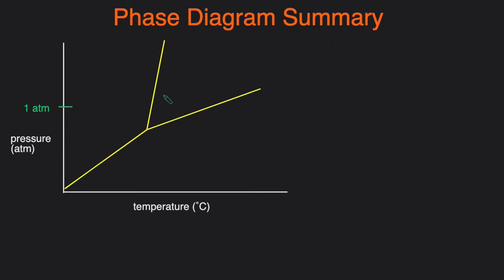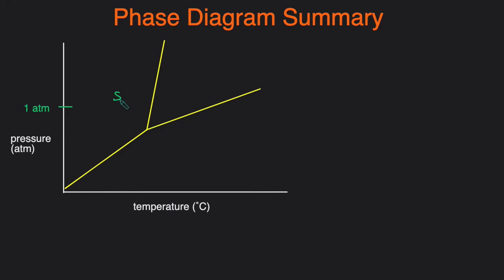If you have an empty phase diagram, an easy way to know what to label as what phase is to go from left to right — it will always be solid, liquid, and gas from left to right. Once you have the phases labeled, you can use that to determine what phase the compound or substance will be at a particular temperature and pressure.